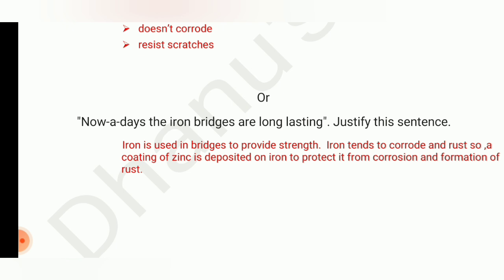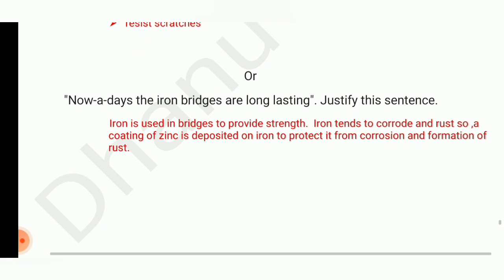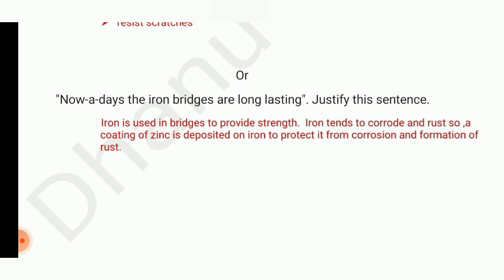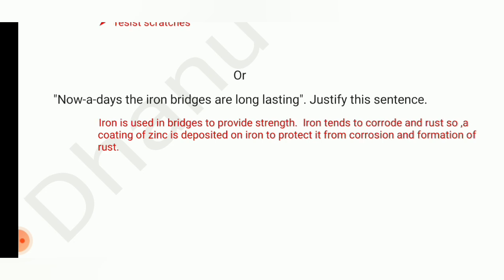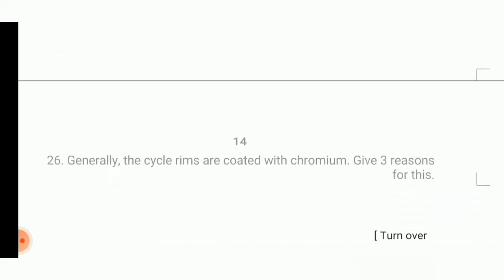Iron is used in bridges to provide strength. However, iron tends to corrode and rust. So a coating of zinc is deposited on iron to protect it from corrosion and formation of rust, making the bridges long-lasting.